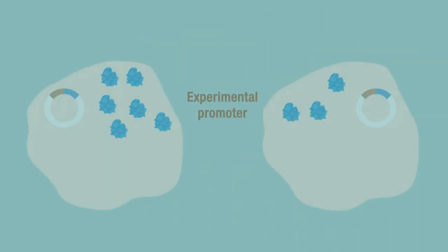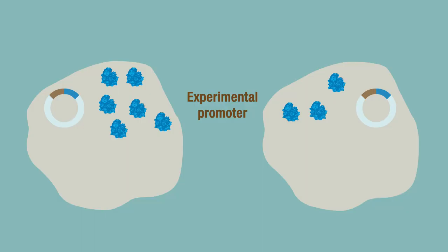How do you correct for variables in your reporter assay, like cell number and transfection efficiency? Dual luciferase reporter assays.